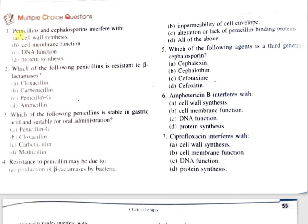The first question: Penicillin and cephalosporins interfere with — option A, cell wall synthesis; B, cell membrane function; C, DNA function; D, protein synthesis. The correct option is A, cell wall synthesis. Penicillin and cephalosporins inhibit cell wall synthesis by inhibiting the cross-linkage of the polymer chains of the peptidoglycan. They don't act on microorganisms which lack the cell wall, for example, mycoplasma.